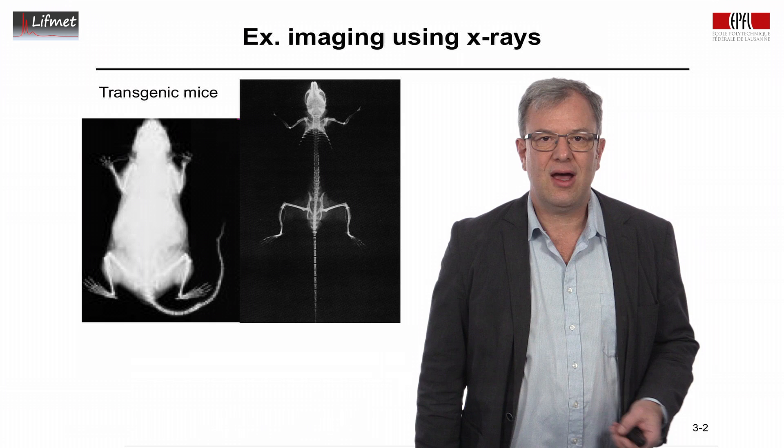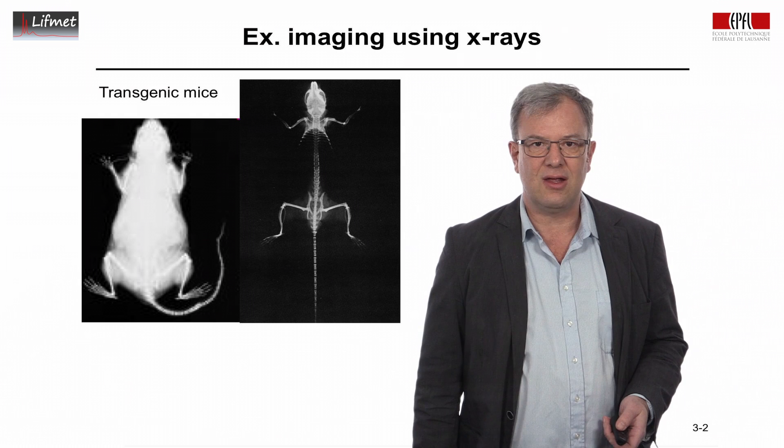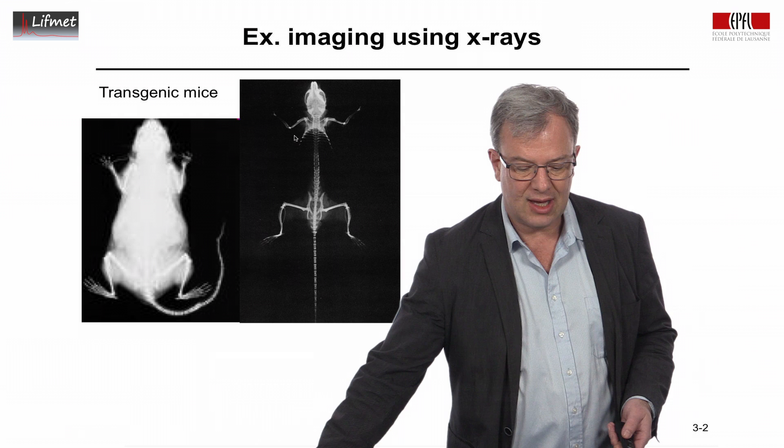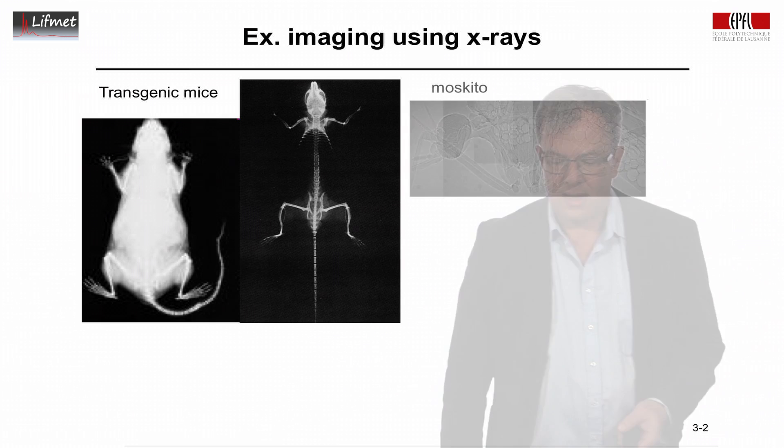However, if one selects only the areas that have high absorbance of X-rays, then we can see a very nice, very high resolution skeleton here of this transgenic mouse with features such as the tail, the legs, the ribcage at very high resolution.